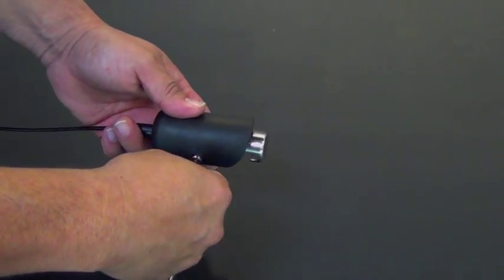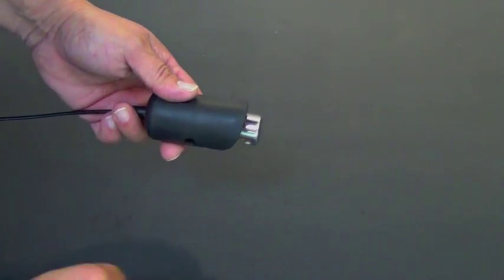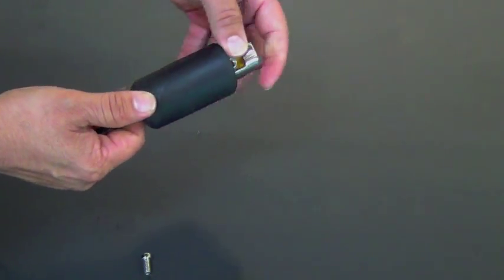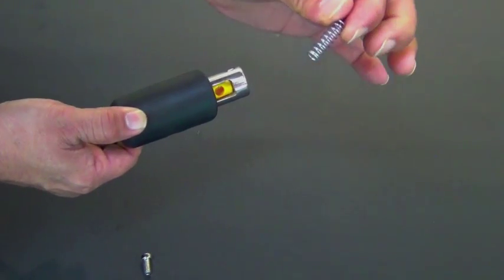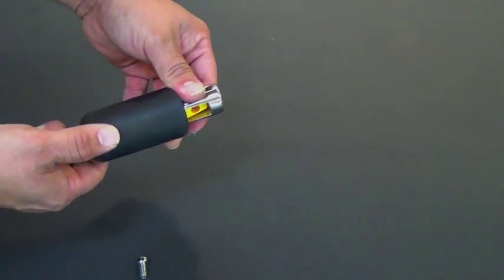Once the screws are removed, push the quick release mechanism out of the housing from the cable side. Please note there is a spring located on the inside along the yellow plastic component. Slide the unit out of the housing slowly and place your thumb over the spring once it becomes visible.